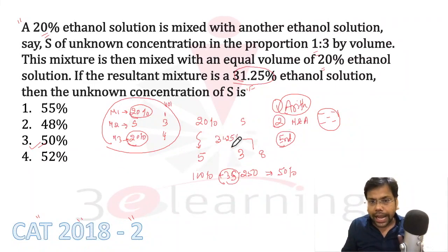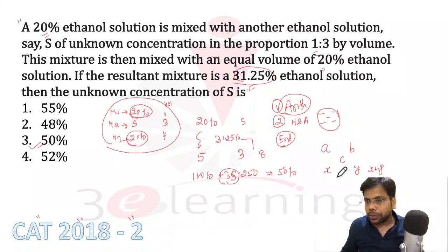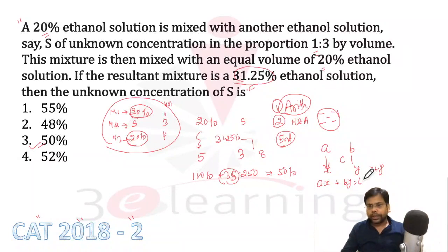Let me explain the mixture alligation method. This is termed the weighted average. If you have A, B, C with quantities X and Y, and total is X plus Y, then: you can cross-subtract using the star, or use the weighted average formula: A·X + B·Y = C·(X + Y).